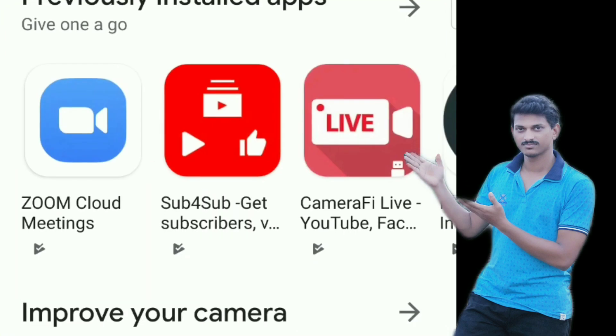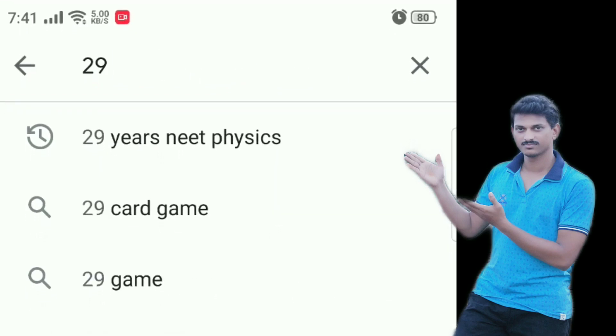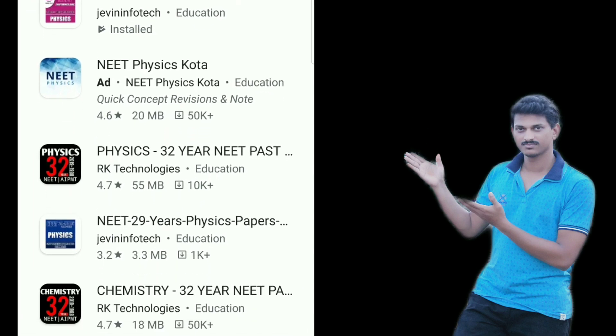First, you will download the app. Use the search button. Search for 29 years NEET Physics. You can select the subject - for example, you will have biology available in the app.